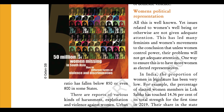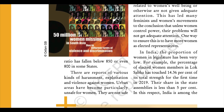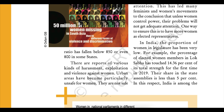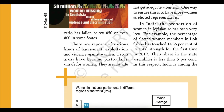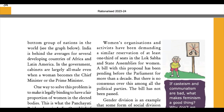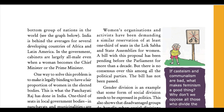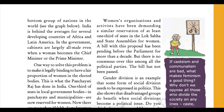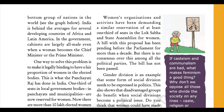Women's Political Representation. Issues related to women's well-being are not given adequate attention. This has led many feminist and women's movements to the conclusion that unless women control power, their problems will not get adequate attention. One way to ensure this is to have more women as elected representatives. In India, the proportion of women in the legislature has been very low. The percentage of elected women members in Lok Sabha touched 14.36% of its total strength for the first time in 2019. Their share in state assemblies is less than 5%. India is among the bottom group of nations in the world and is behind the averages for several developing countries of Africa and Latin America. In the government, cabinets are largely all male, even when a woman becomes the chief minister or the prime minister.